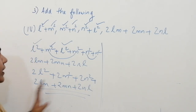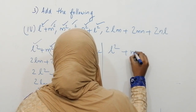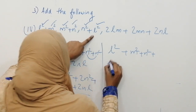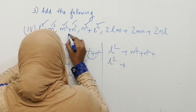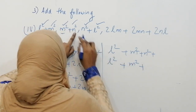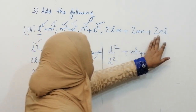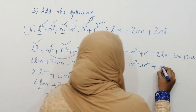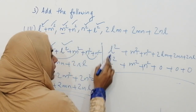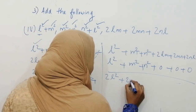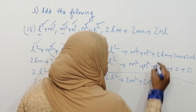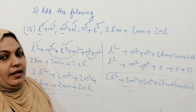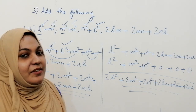Using the column method: write l² plus m² plus n² in rows, identifying like terms column by column. l² plus l² is 2l², m² plus m² is 2m², n² plus n² is 2n². The terms 2lm, 2mn, and 2nl have no like terms, so just copy them down. The final answer is 2l² plus 2m² plus 2n² plus 2lm plus 2mn plus 2nl. I hope you understood how to add algebraic expressions. Please mention any questions in the comment box, and if you like my videos, please like, share, and subscribe.